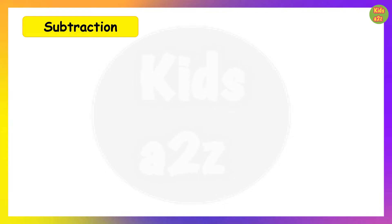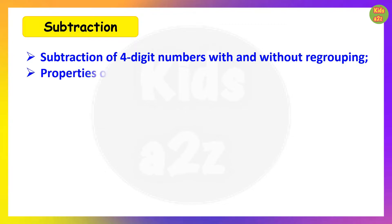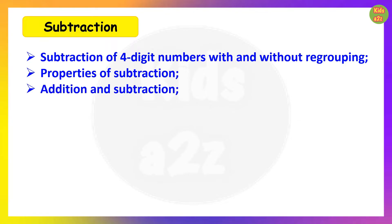The next chapter is Subtraction. Topics included are: subtraction of four digit numbers with and without regrouping, properties of subtraction, and addition and subtraction combined — that means they have to add the first number to the number with the plus sign before it, and from the sum subtract the number with the minus sign before it. For example, first they add 432 with 3456, and then from the sum they subtract 2324.